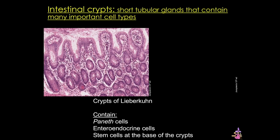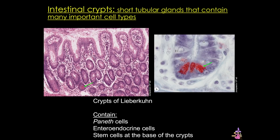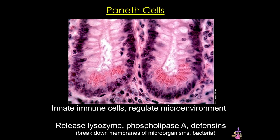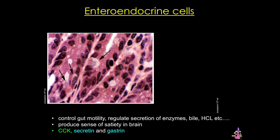At the base of these crypts are paneth cells and stem cells. The red staining cells visible at the bottom of the crypts are paneth cells — remarkable cells considered the innate immune cells of the intestine. They regulate the microenvironment and are bacteriostatic, releasing lysozyme and defensins apically into the lumen. The GI tract also has the largest number of endocrine cells, called the diffuse neuroendocrine system. As in the stomach, these hormones are released basally, controlling many functions of the GI system.